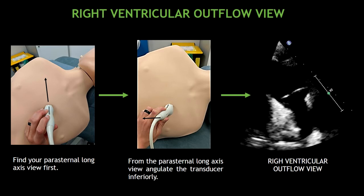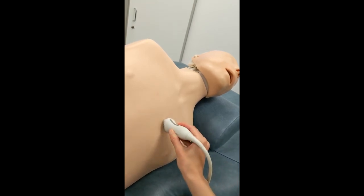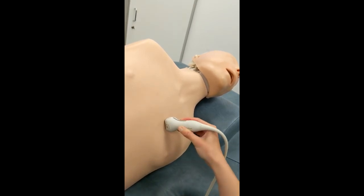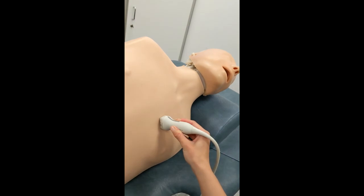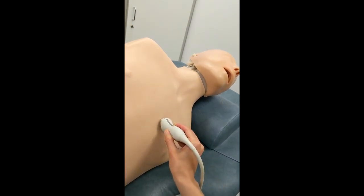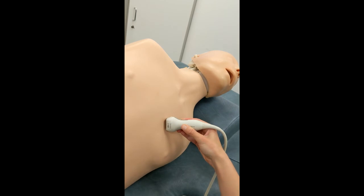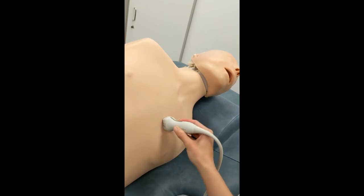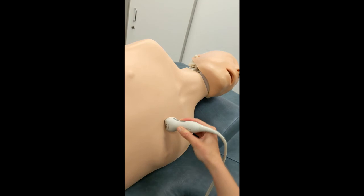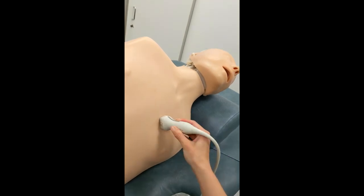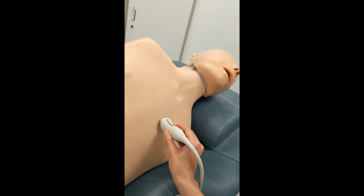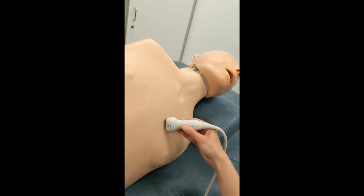Now, I'm going to show you a video demonstrating the transducer movement to obtain the different parasternal long axis views. You can see that I placed the probe on the 3rd intercostal space and the index marker is pointing to the patient's right shoulder. From this position is where you have to angulate the probe to obtain the different views — parasternal long axis views, inferiorly and superiorly.